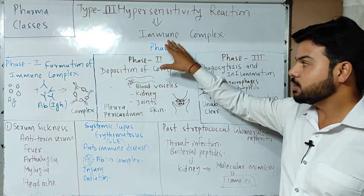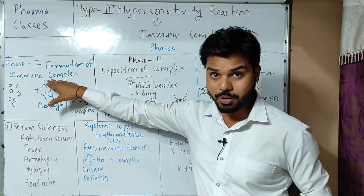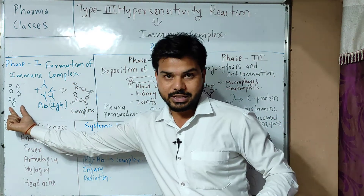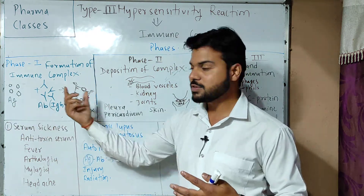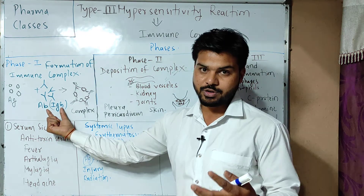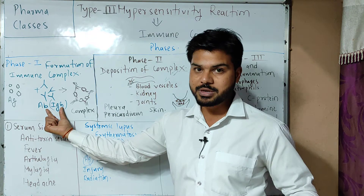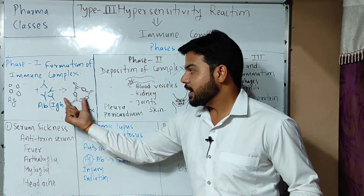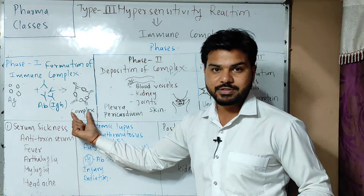Type 3 hypersensitivity can be divided into three phases. The first phase is the formation of the immune complex. When an antigen — which may be endogenous or exogenous — enters the body, antibodies are released through the immune response process by plasma cells or B cells. Because of the antigen-antibody reactions, a complex is formed.